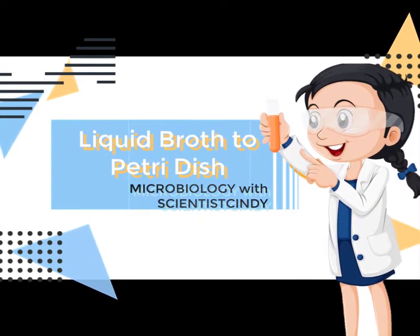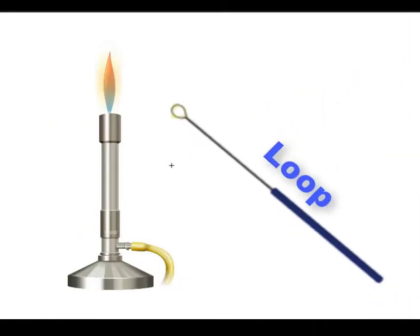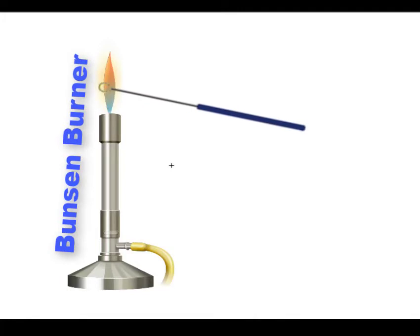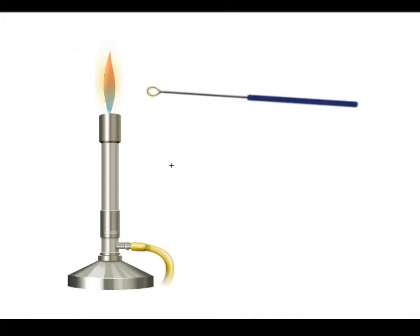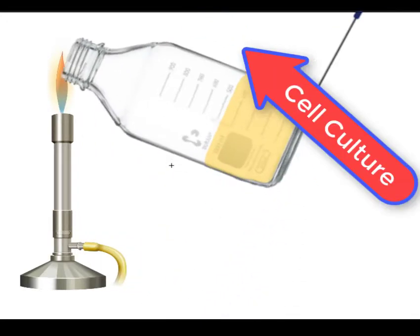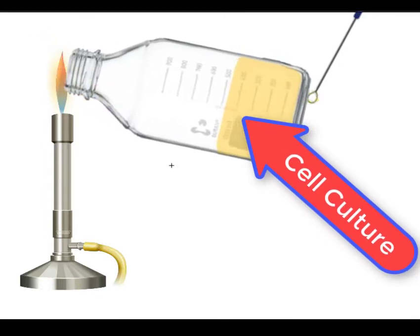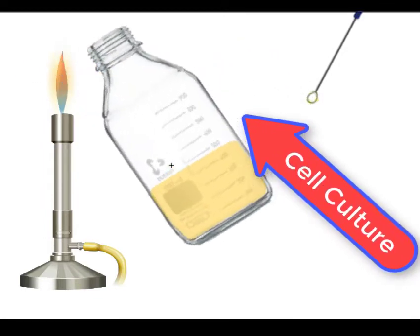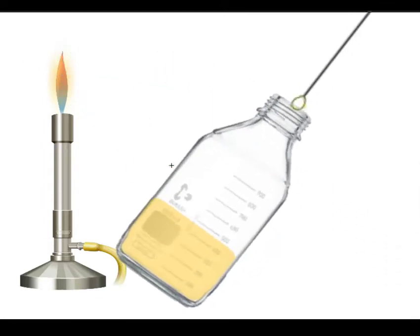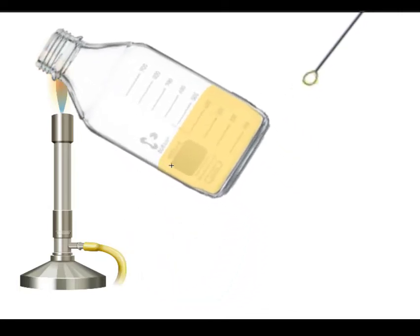How to transfer bacteria from liquid culture to a petri plate. Step 1: Flame the loop, remove the cap from the liquid culture, and flame the top. Place the loop in the broth and flame the top of the liquid culture bottle once again before replacing the cap.